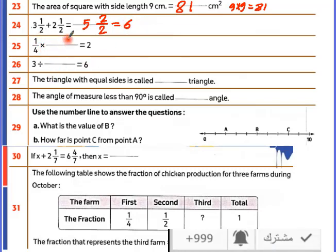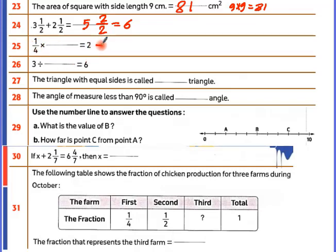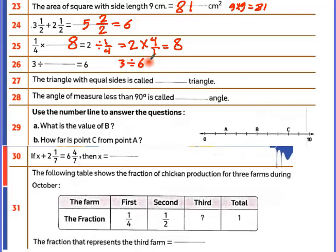For 4 times something — the unknown is on the other side — so it's 2 divided by 1 over 4, which means 2 times 4 over 1 (reciprocal) equals 8. For 3 divided by 6: equals 3 times 1 over 6; simplify to get 1 over 2. So the answer here is 1 over 2.